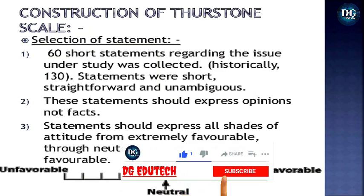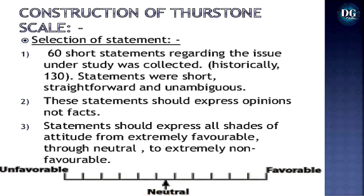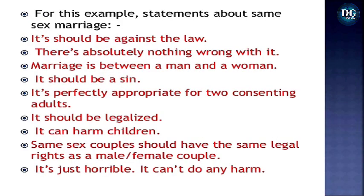Construction of a Thurstone Scale: the first step is selection of statements — 60 short statements regarding the issue under study are collected (historically, 130 statements were used). Statements should be short, straightforward, and unambiguous, expressing opinions not facts, covering all shades of attitude from unfavorable to neutral to favorable. For example, statements about same-sex marriage: 'It should be against the law,' 'There is absolutely nothing wrong with it,' 'It should not be a sin,' 'It should be legalized,' and 'Same-sex couples should have the same legal rights as male-female couples.'